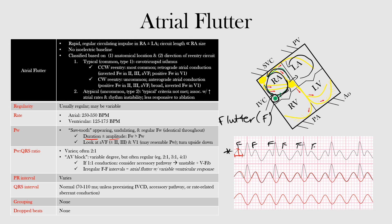Looking at a normal EKG or rhythm strip, the red portion highlights the flutter waves. Notice the undulating pattern — there are no flat baseline areas, just a continuous undulation. If you were to take all the flutter waves or atrial activity out, you would see a similar continuous pattern, confirming those are the flutter or F waves.